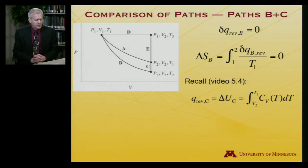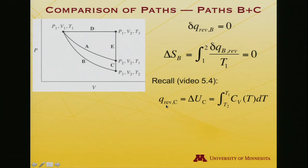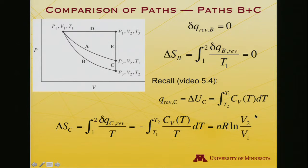And then I'll ask you to remember that we worked out, and you can look at video 5.4 if you'd like to see the individual steps, that the heat transfer for step C, the constant volume heating, was equal to - there's no work done, it's equal to the internal energy change. And so that is the integral from T2, the starting temperature, to T1, the ending temperature, CV T dT.